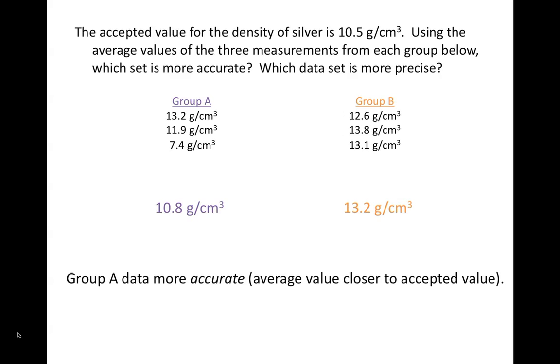The average value derived from group B's data, 13.2 grams per centimeter cubed, is not very accurate because it deviates significantly from the accepted value for the density of silver, which is 10.5 grams per centimeter cubed.